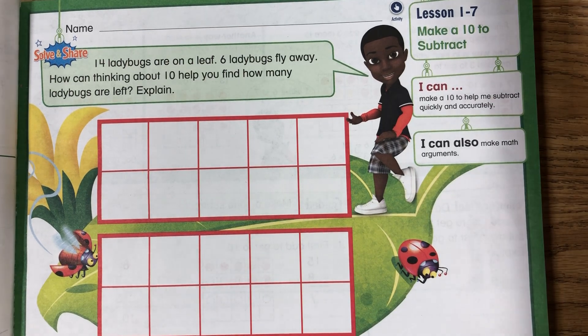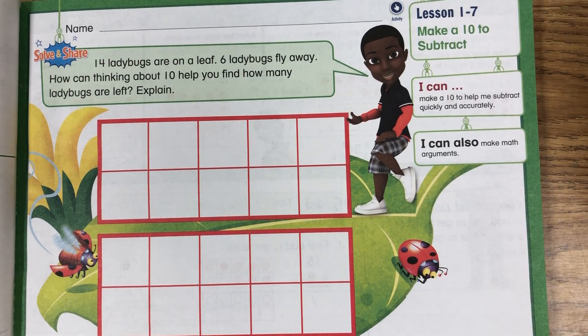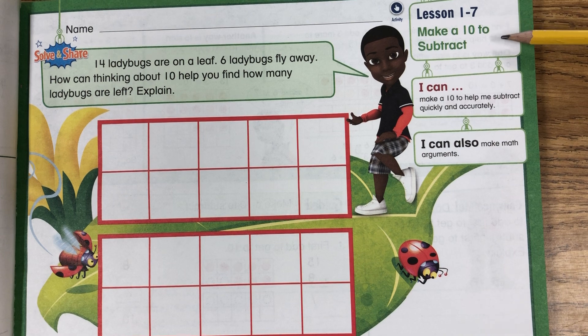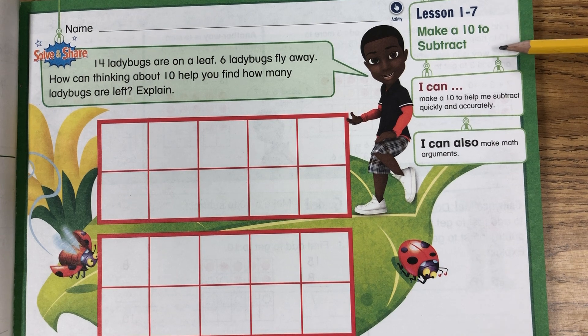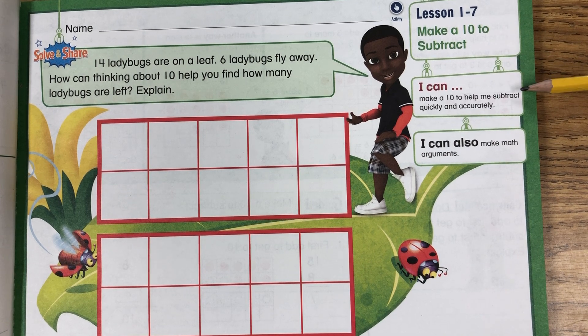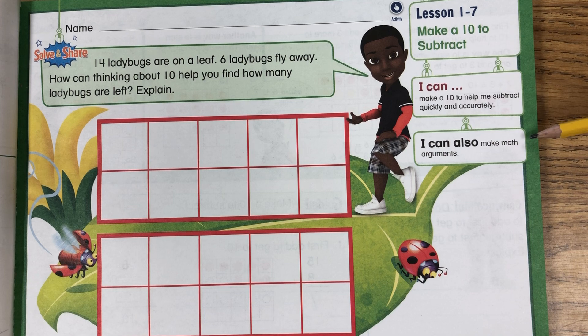Good morning. Today we're doing lesson 1.7: Make a 10 to subtract. I can make a 10 to help me subtract quickly and accurately. I can also make math arguments.